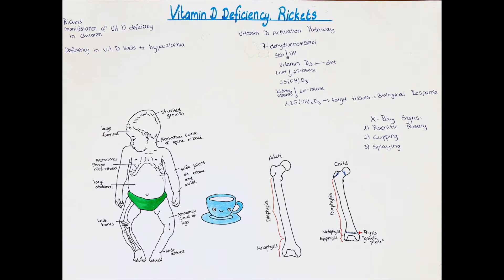The next high yield point is that vitamin D has a direct effect on blood calcium levels. A deficiency in vitamin D will subsequently result in hypocalcemia — too low levels of calcium in the blood. This is due to vitamin D stimulating processes such as calcium absorption in the intestines as well as calcium reabsorption in the distal renal tubules.